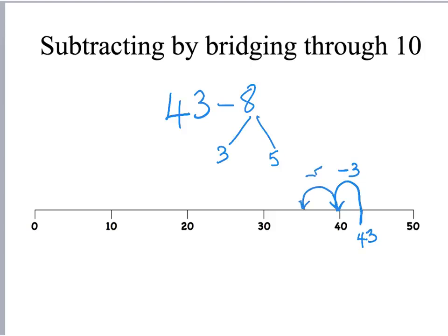That's another easy calculation. I should know without counting in ones that the answer to that is 35. And so 43 minus 8 is 35.